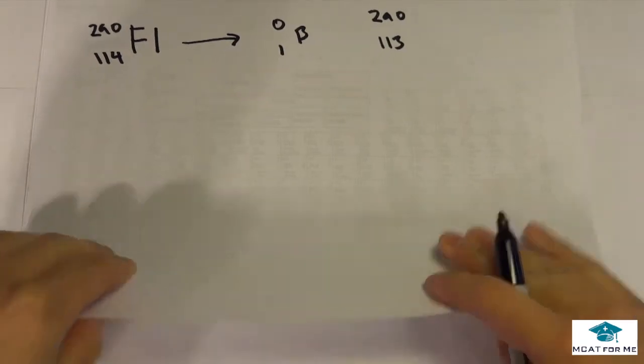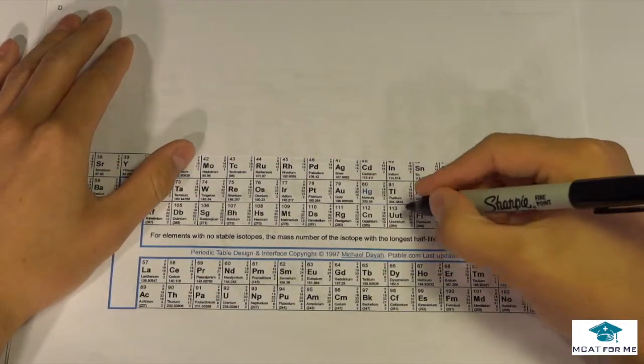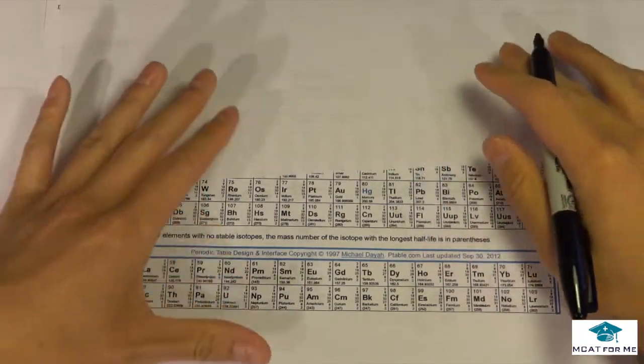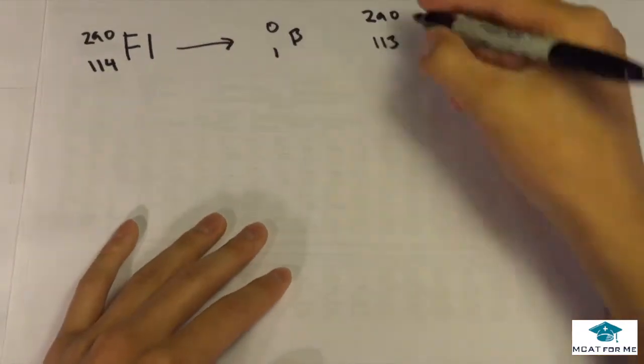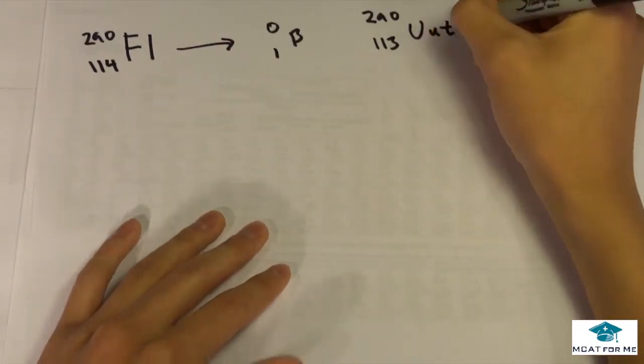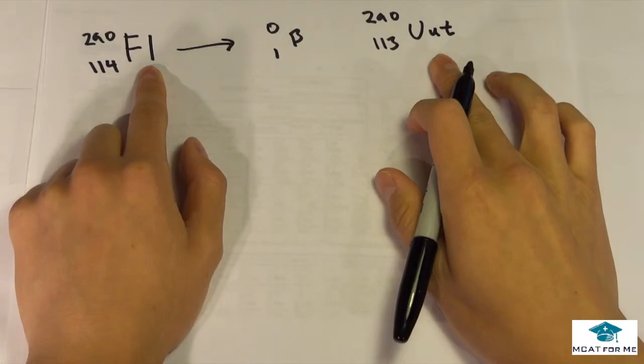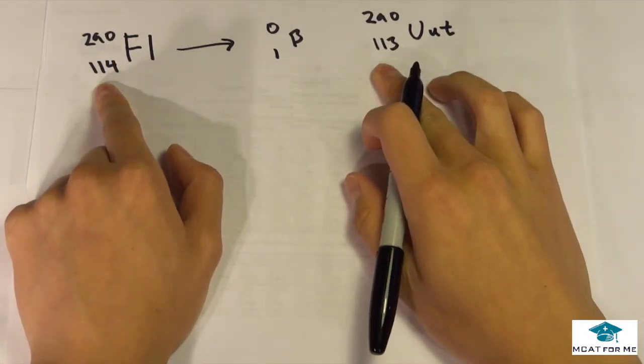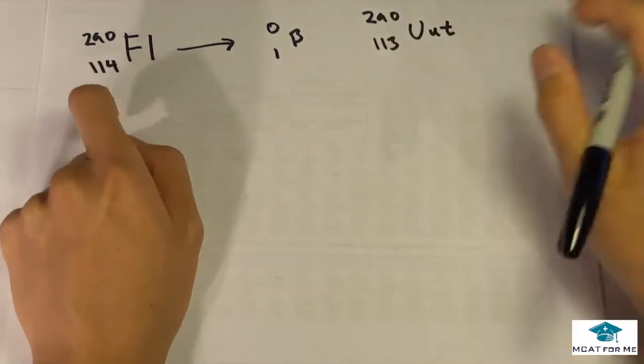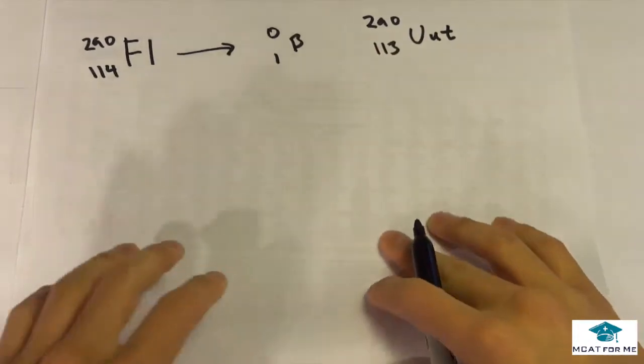So we have to look, what has a proton number of 113? Well we see UUT does. So we know that the molecule is UUT. So we know that the actual element changed because the proton number changed, but the mass number stays the same for positron emission.